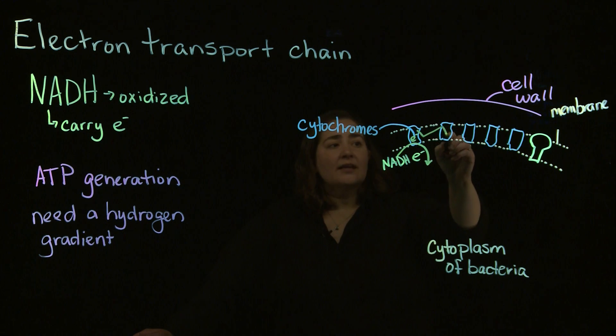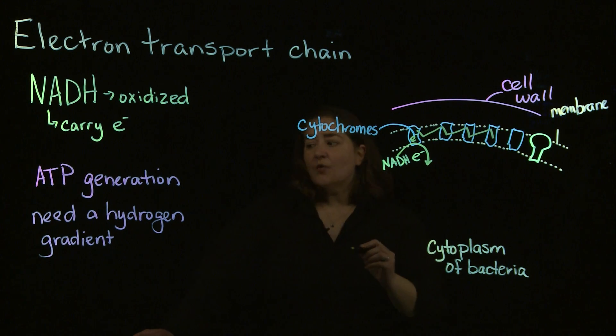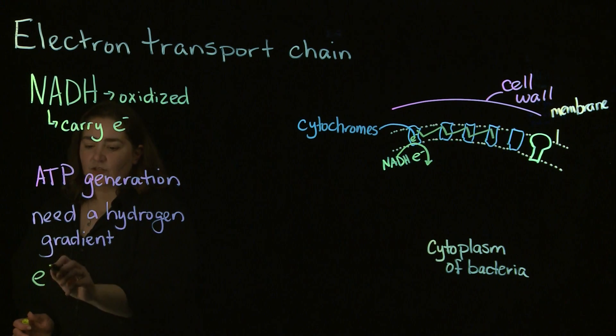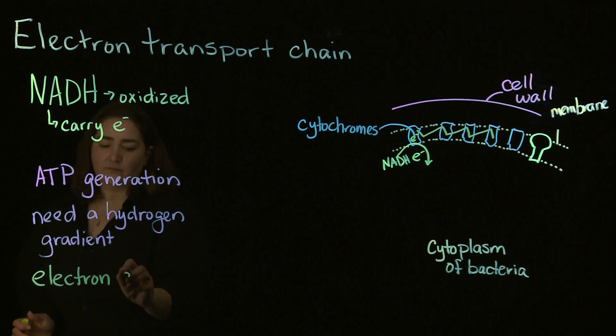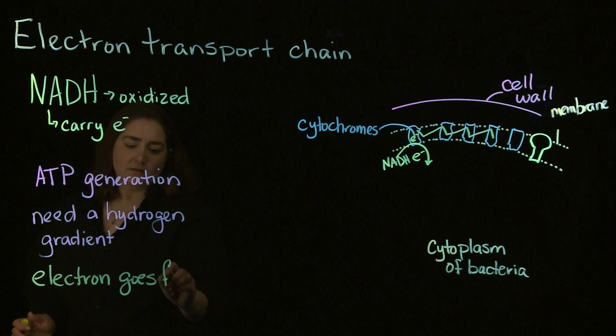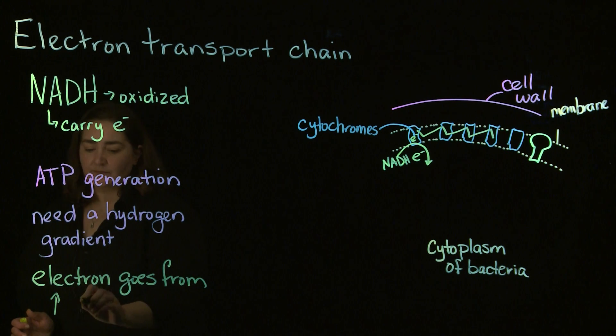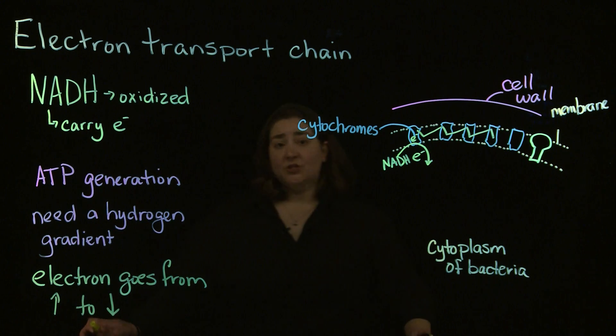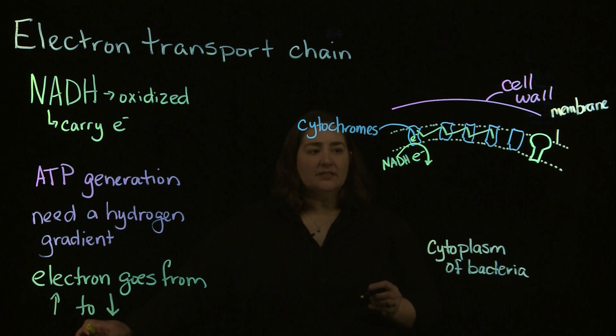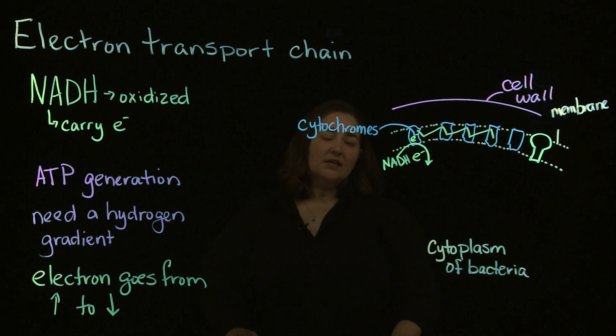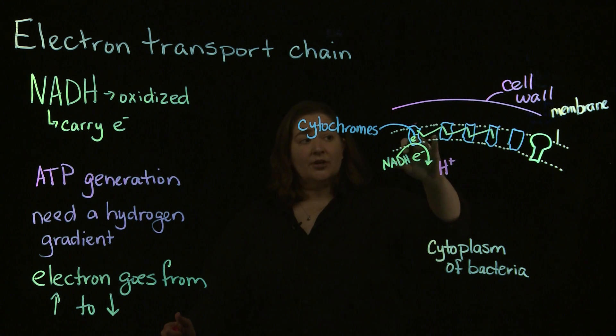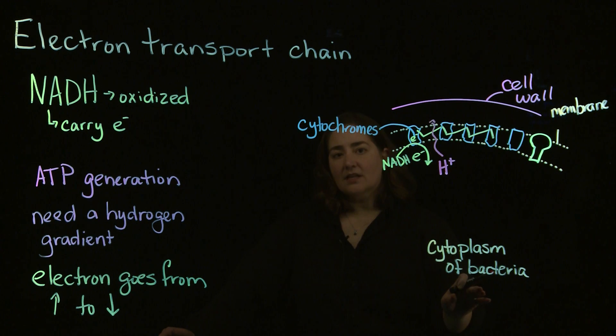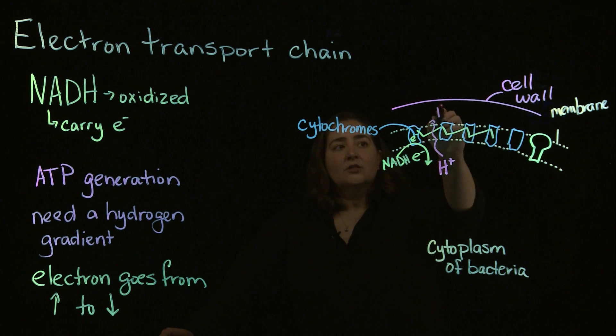That electron is going to kind of bounce around in the membrane and it's going to go from a high energy to a low energy electron as it passes through those various cytochromes. And what that does is that energy that's released from the electron bouncing around in the cell membrane, that's going to allow hydrogen from the cytoplasmic side of that plasma membrane to move into the space between the membrane and the cell wall.